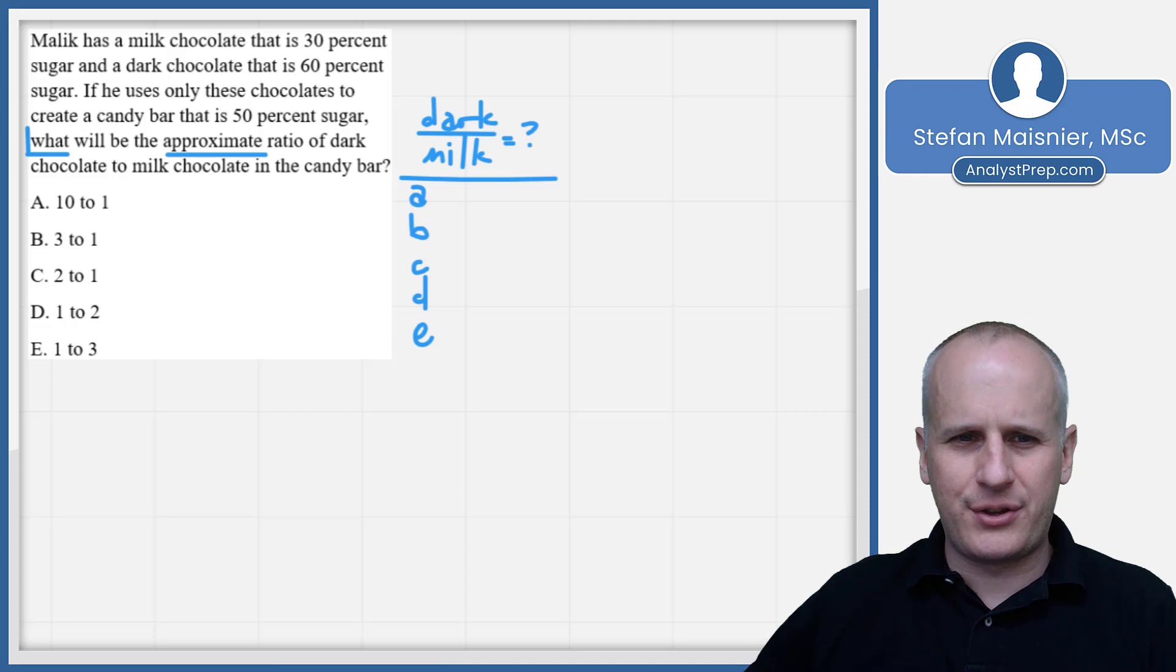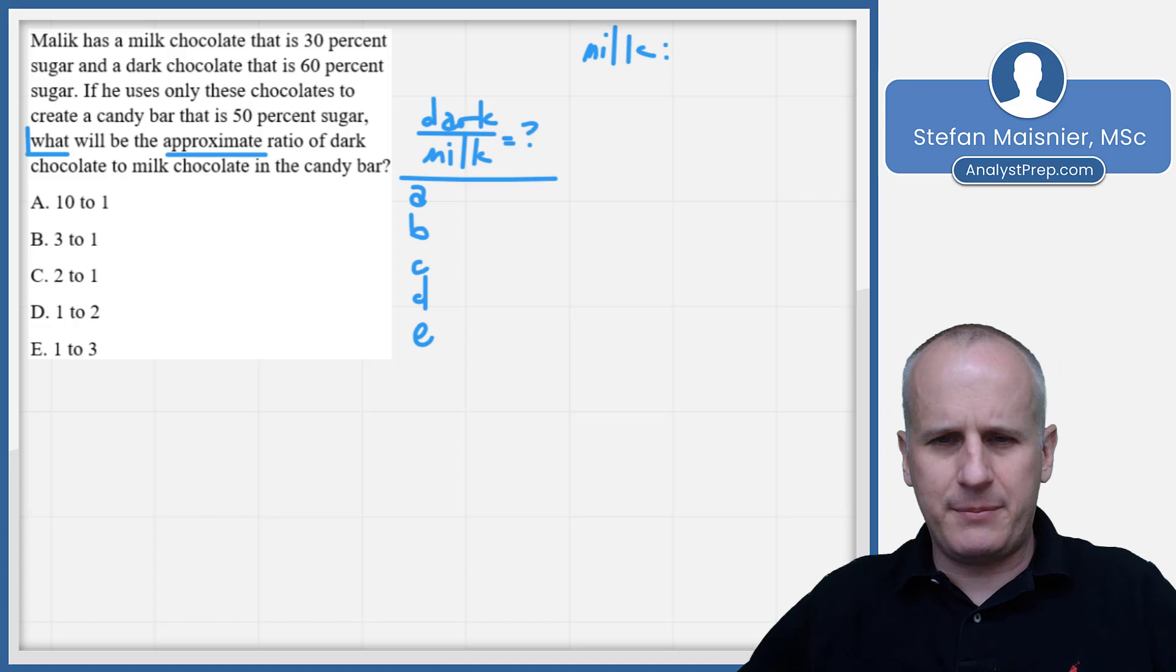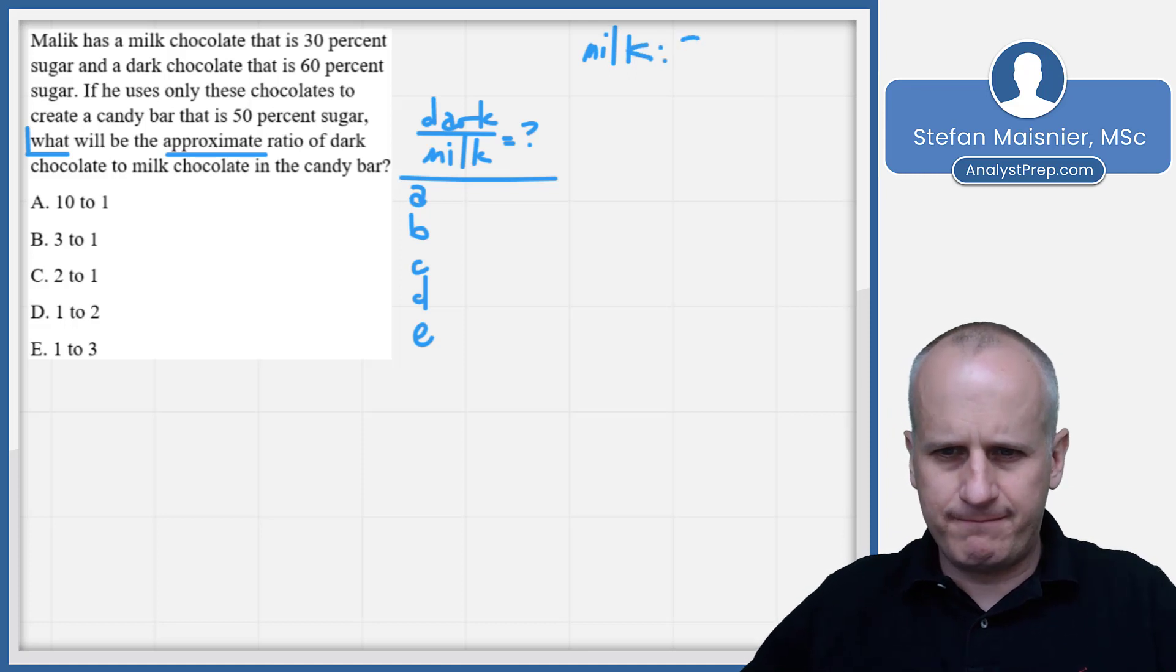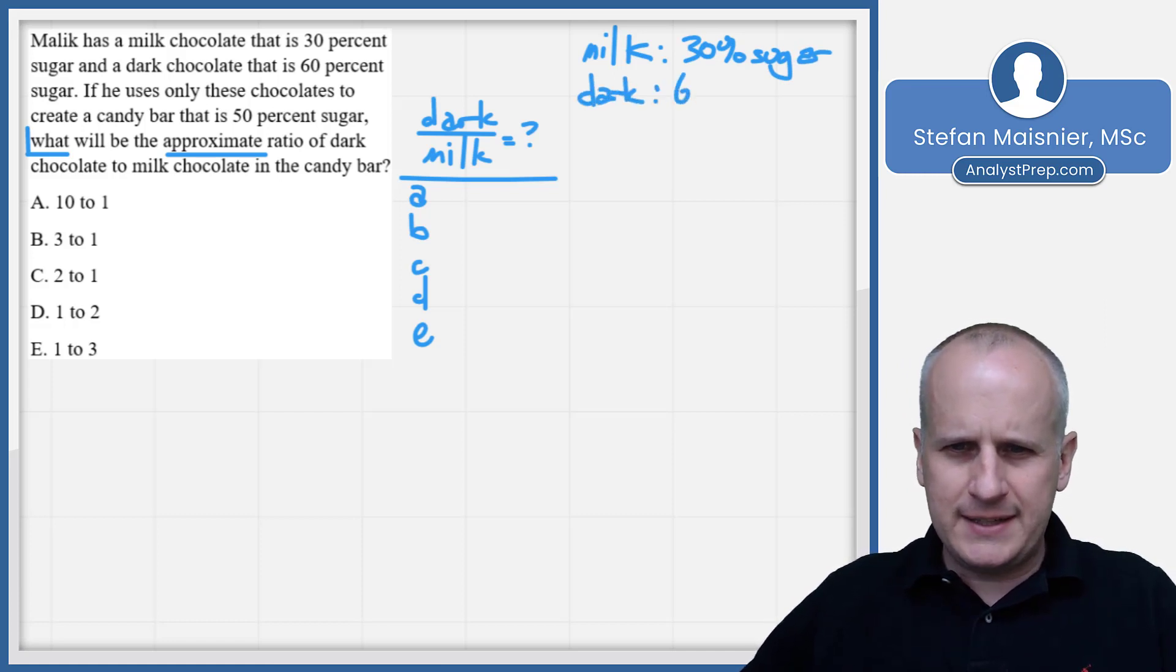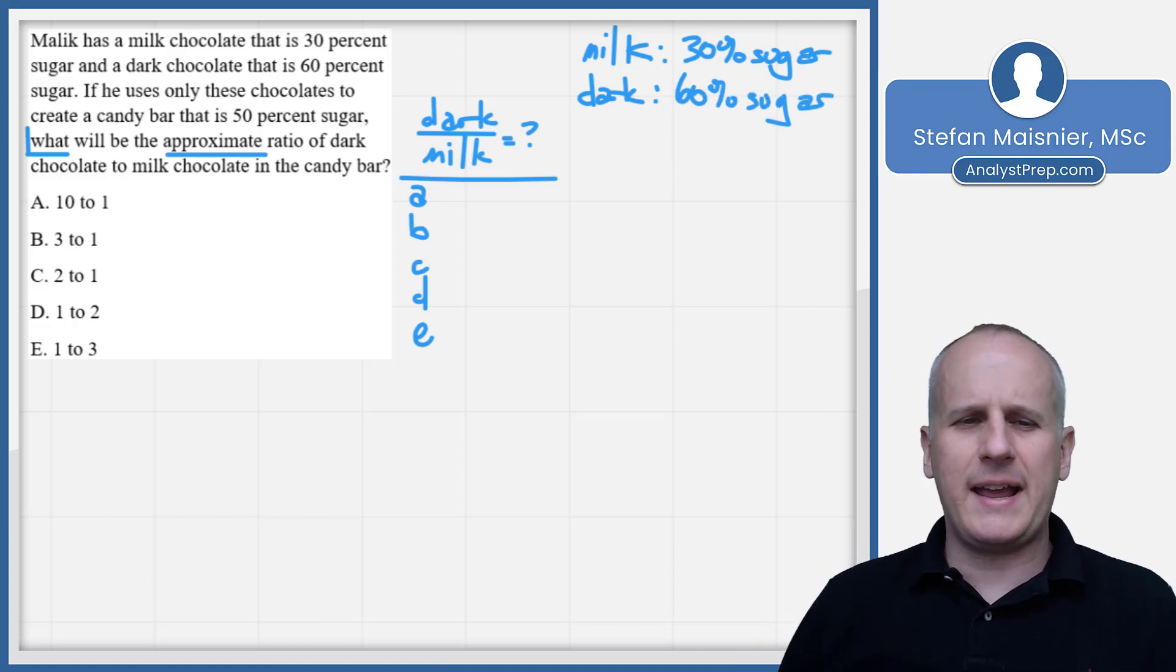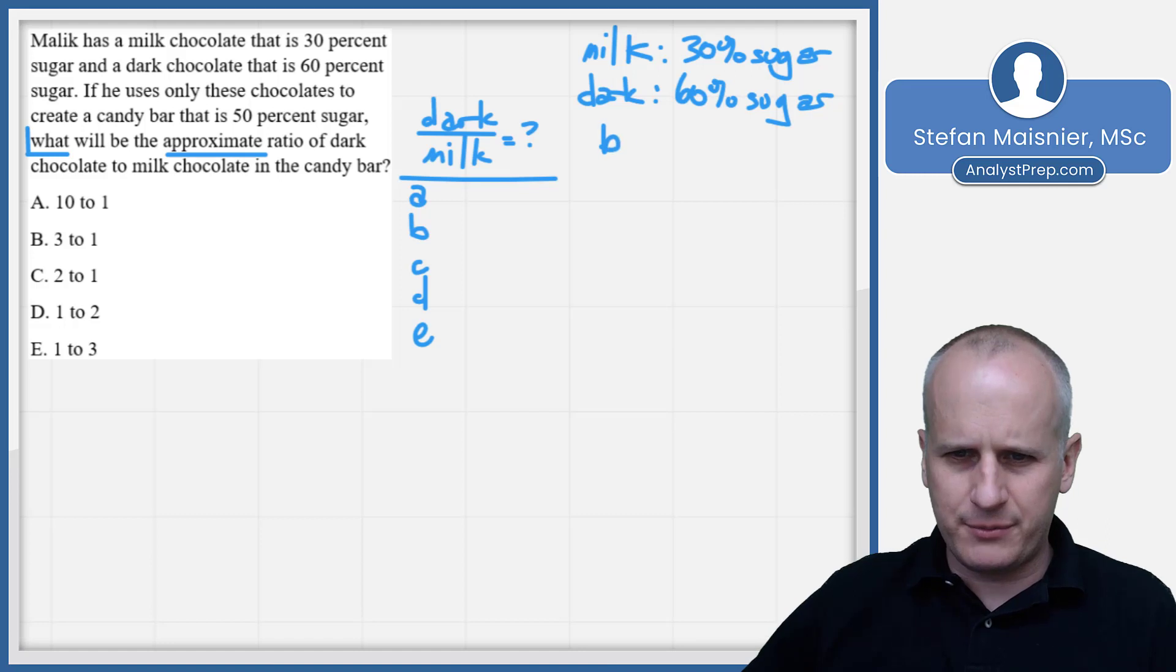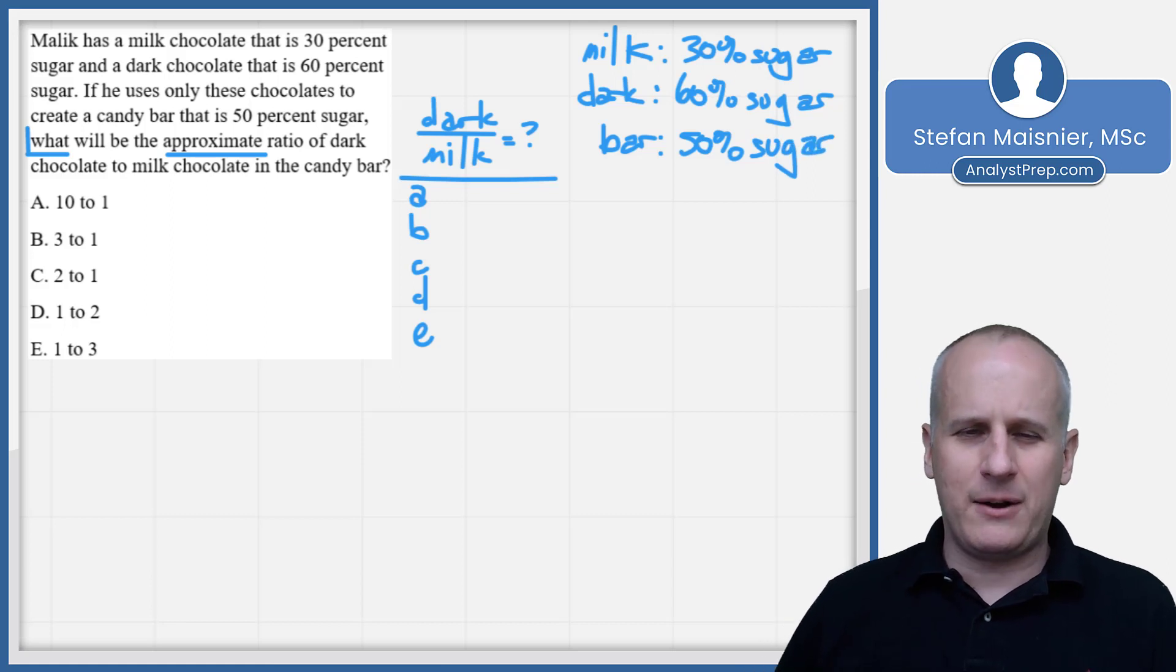So we start at the beginning. Malik has a milk chocolate that is 30% sugar. So we know milk is 30% sugar. We know that dark is 60% sugar. And we then find that Malik uses only these chocolates to create a candy bar that is 50% sugar. And now we're being asked for that question again of what will be the approximate ratio of dark to milk.